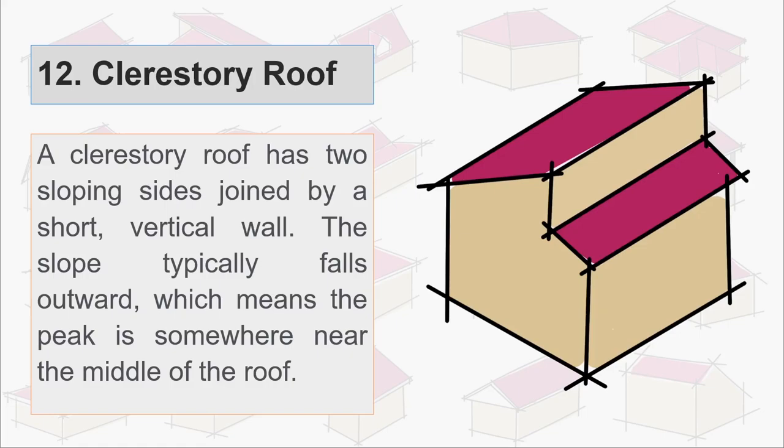Twelfth is clerestory roof. A clerestory has two sloping sides joined by a short vertical wall. The slope typically falls outward which means the peak is somewhere near the middle of the roof.